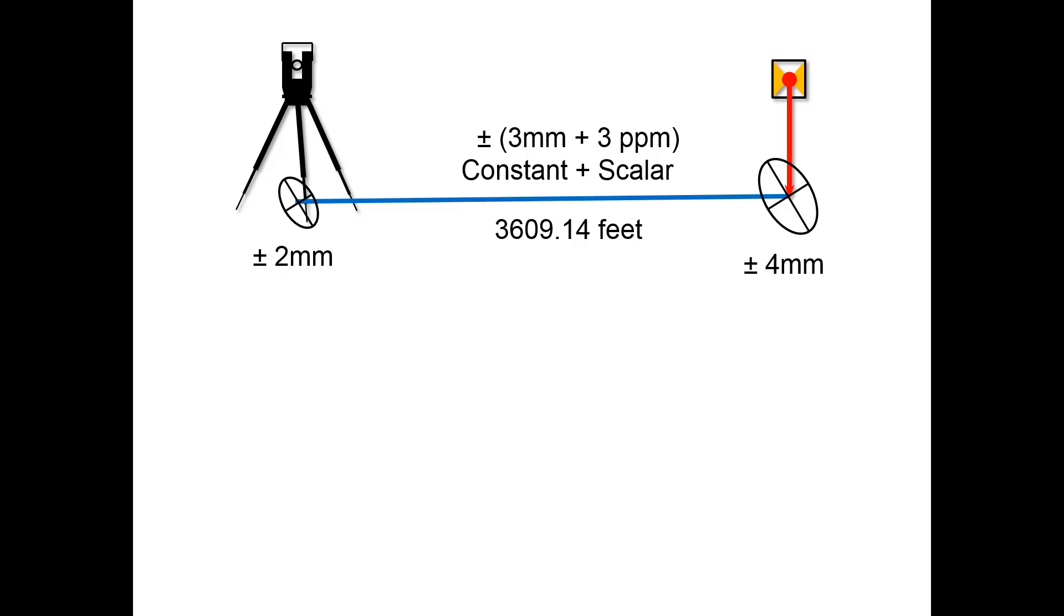Here's our scenario graphically. We have the instrument on the left with an error ellipse indicating plus or minus 2 millimeters for centering. We've got the constant and scalar error in our distance of 3609.14 feet, and at the target we have a centering error of plus or minus 4 millimeters.